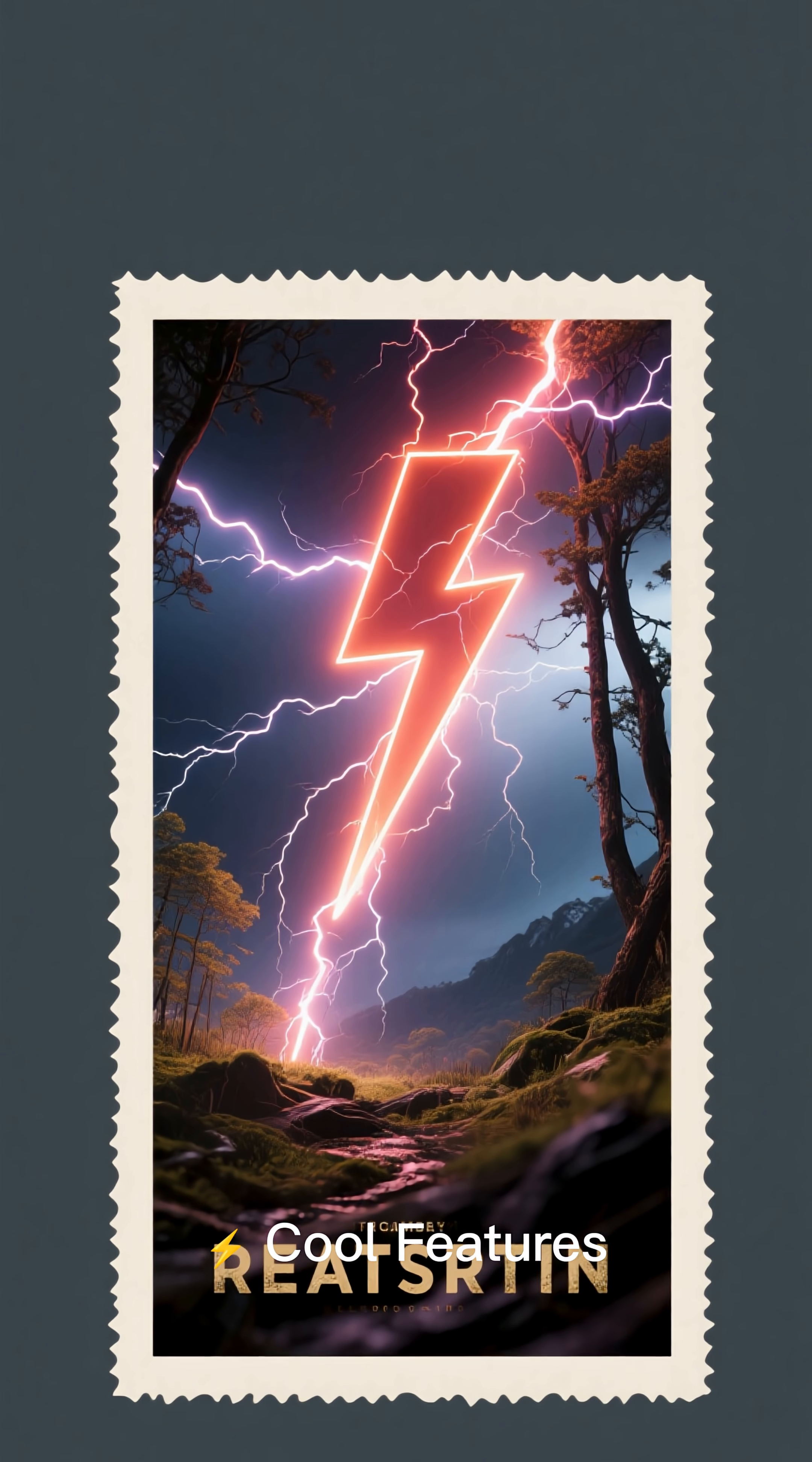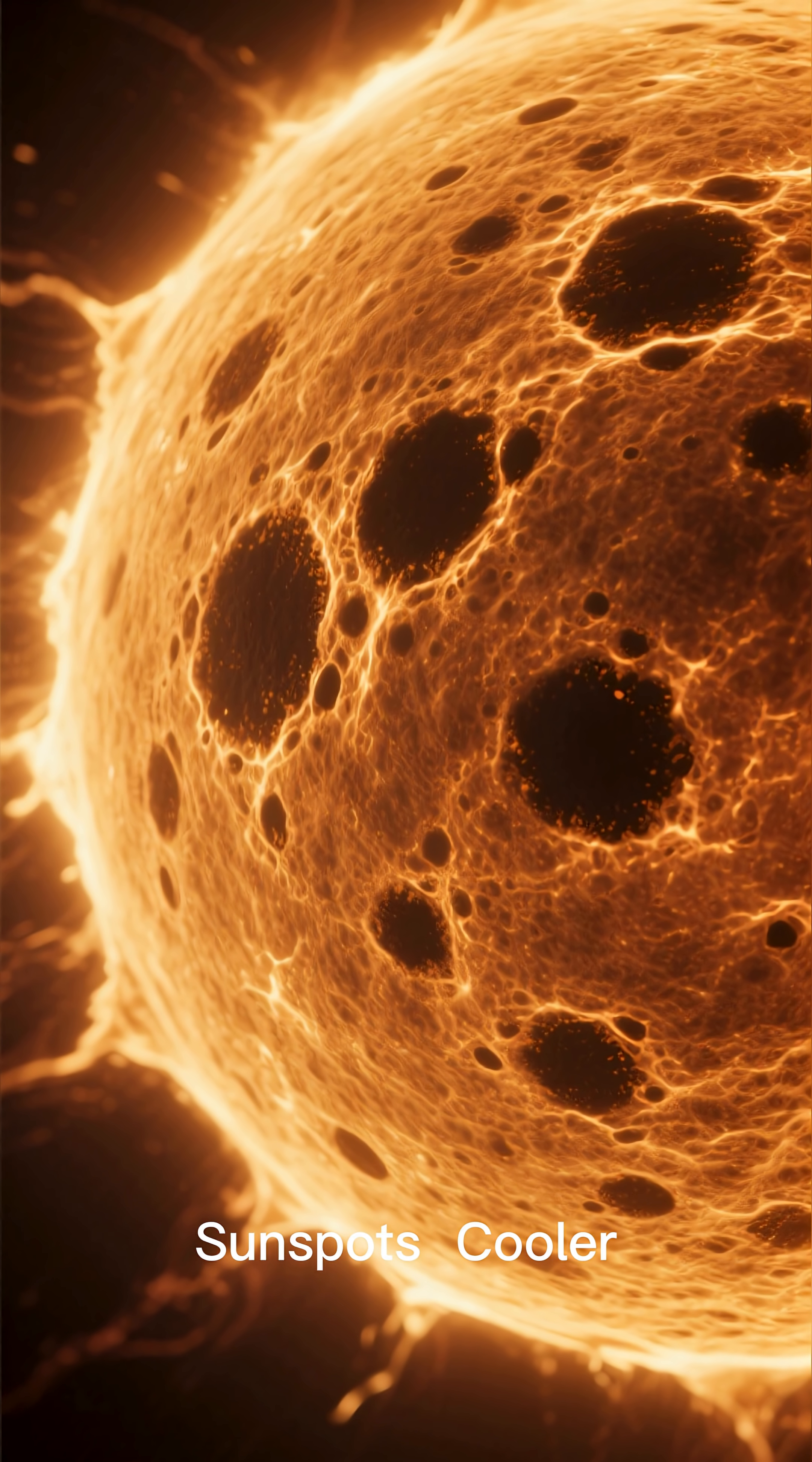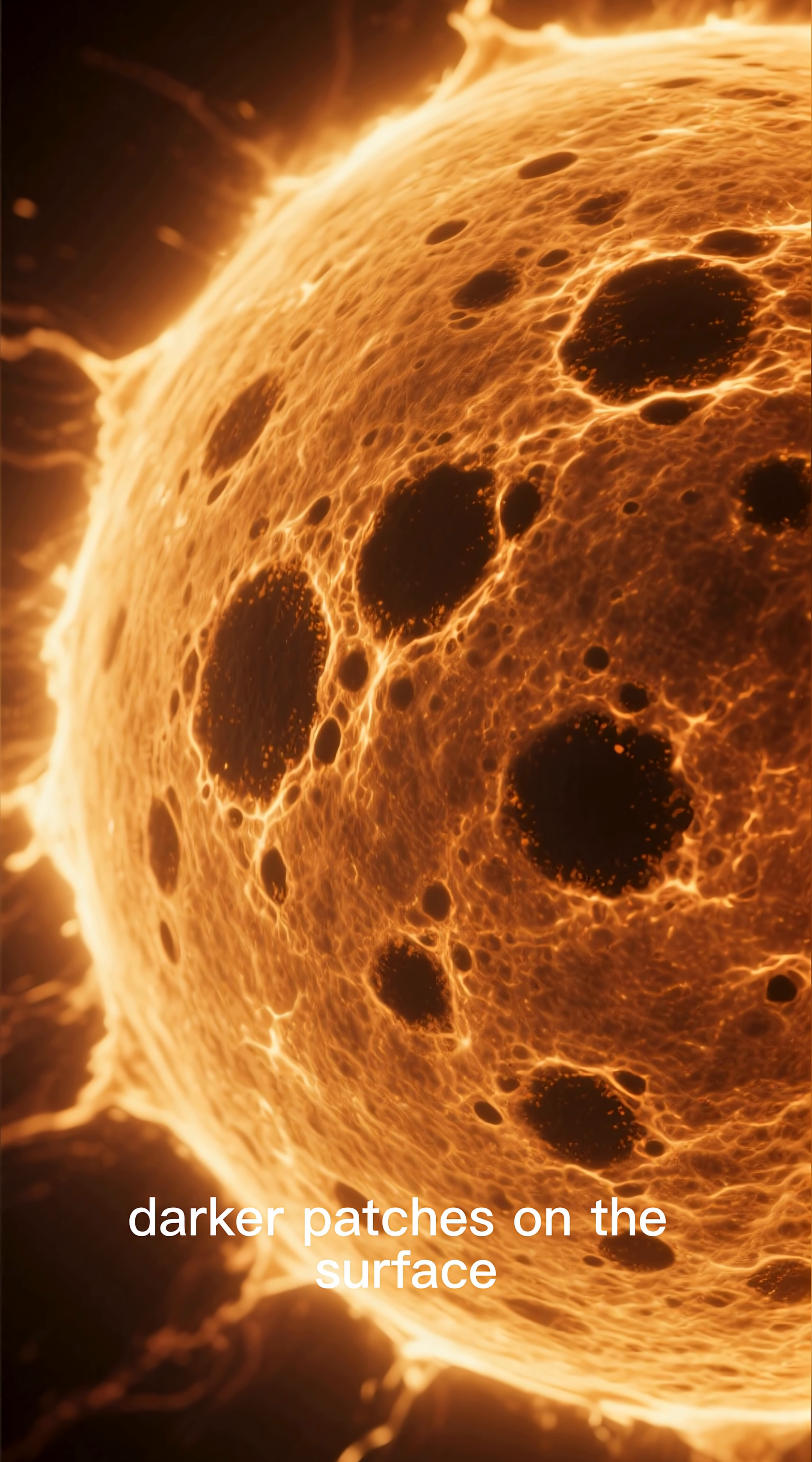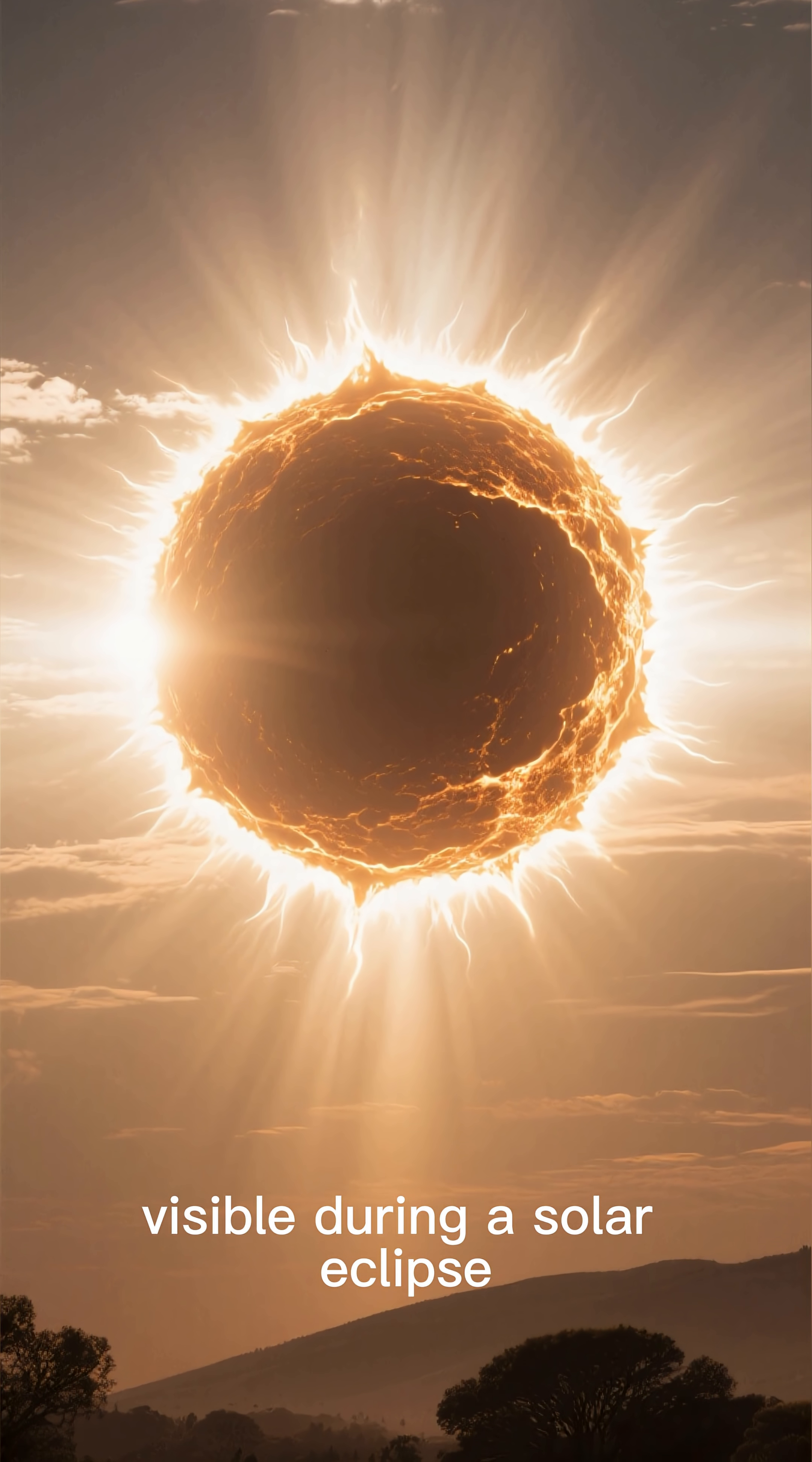Cool features: solar flares - explosive bursts of energy; sunspots - cooler, darker patches on the surface; corona - the outer atmosphere, visible during a solar eclipse.